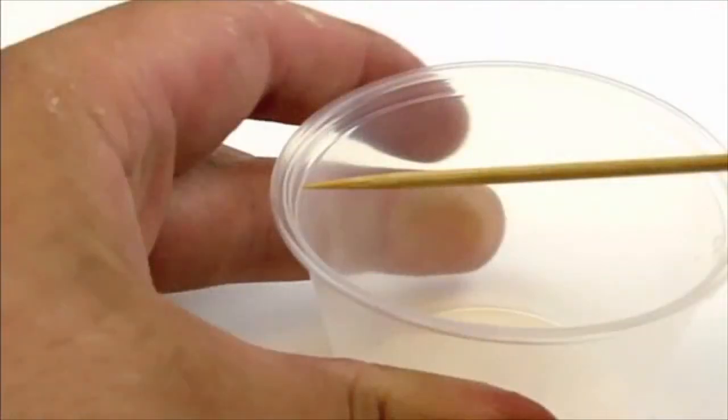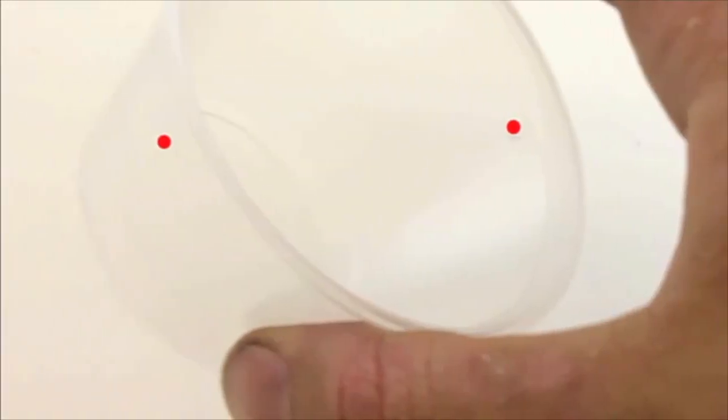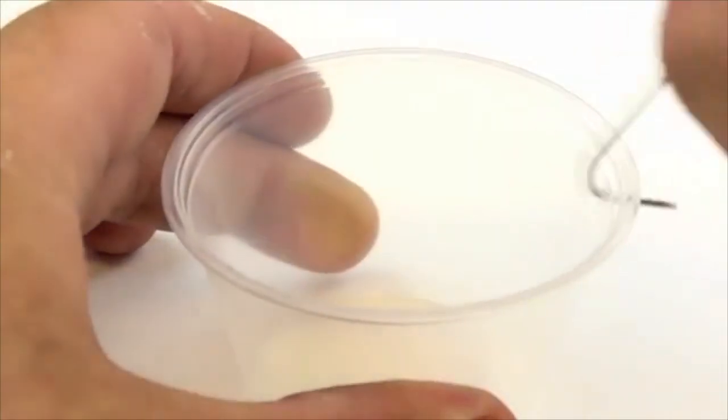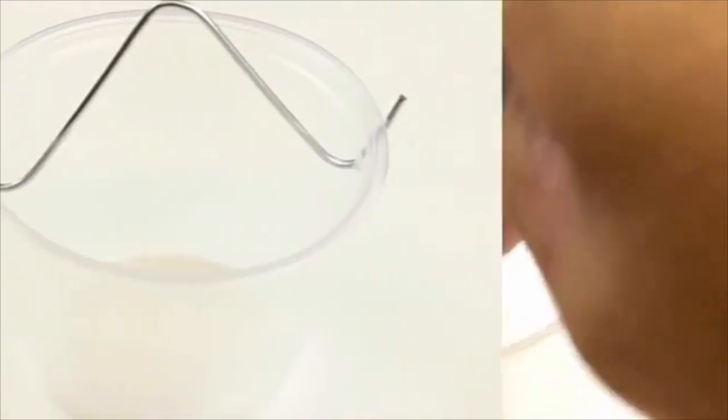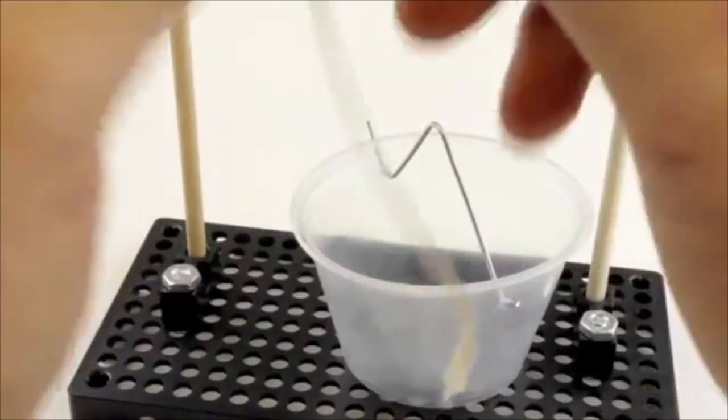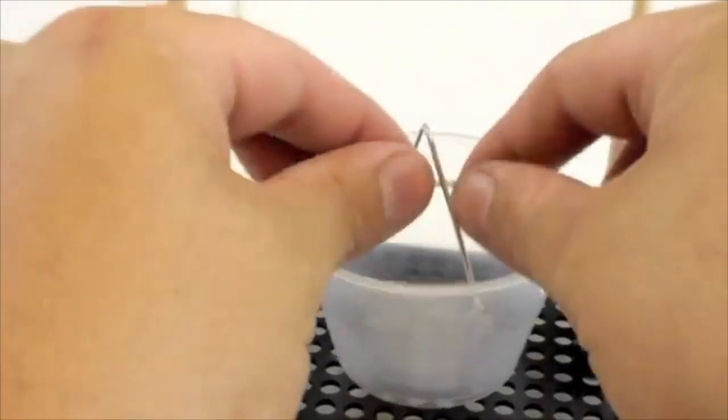Poke two holes into your cup. You can use the skewers with the points on them to make a hole. Make sure the holes are opposite each other. Attach the wire however you feel will work the best. Now just tie the other end of the string onto your wire.